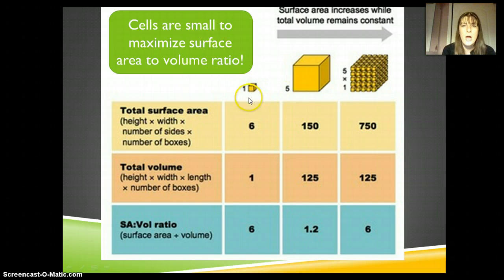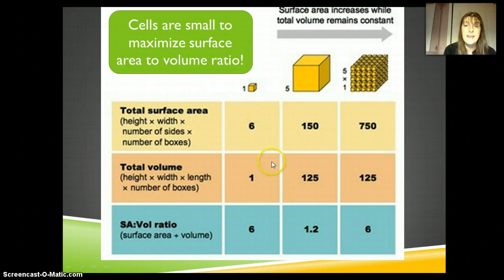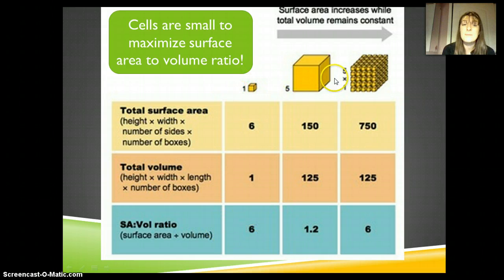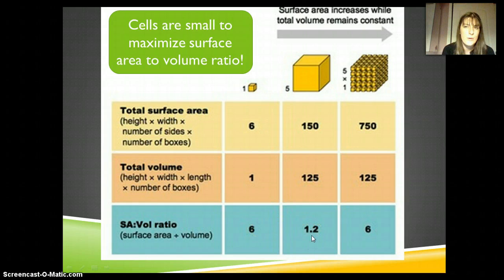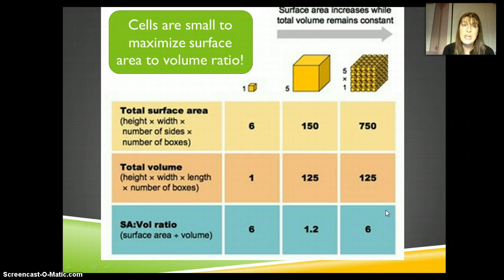Let's imagine a box that was one by one by one. Cells aren't squares, but we're assuming they are. The surface area there would be 6, the volume would be 1, and the surface area to volume ratio would be 6. If I took that thing and made it just 5 times bigger, now my surface area is 150, my volume is 125, and my surface area to volume ratio went all the way down to 1.2. So if cells were broken down into little tiny pieces instead, we could again have a large enough surface area to volume ratio to maintain diffusion at a rate that allows for life.